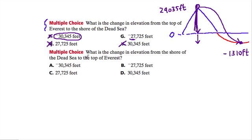And they ask here, what is the change in elevation from the shore of the Dead Sea to the top of Everest? So now we're starting here and going up. So that's a positive change. And it's going to be the same, except now it's a positive 30,345.